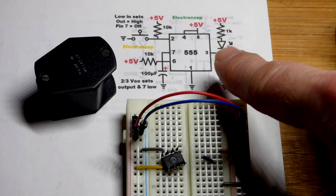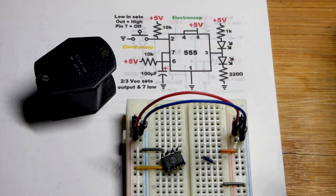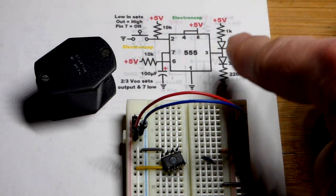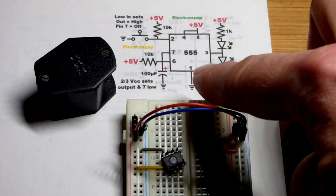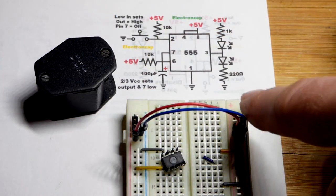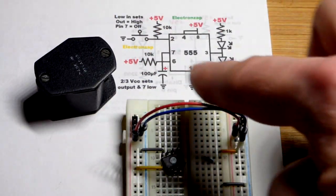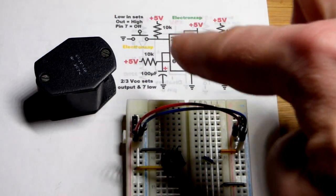So now we're going to look at the 555 timer in monostable mode. What that means is the output's going to stay low. In this case, I'm going to use a blue LED. The blue LED will stay lit up until we close the switch right there.